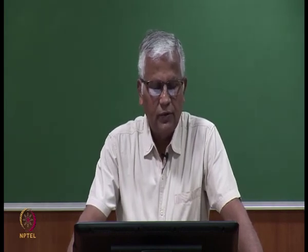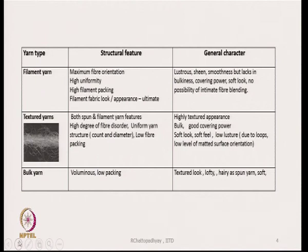Filament yarns generally have very high fibre orientation because there are no staple fibres. They are very uniform, and the filament packing density is quite high, depending on the level of twist used. Generally, filament yarns are very lustrous, sheeny, and smooth, but they lack in bulkiness and covering power. If you want to produce a very lustrous fabric free from surface hairs, go for filament yarns. However, intimate blending between filaments of two different types of filament yarn is not very successful.